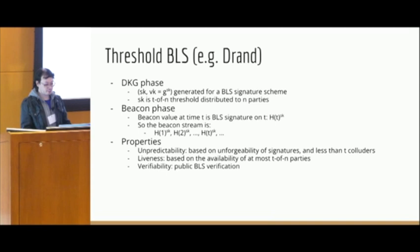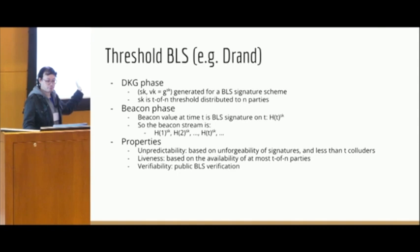So what properties does this have? It's unpredictable because it's based on the unforgeability of signatures. We already know that BLS is an unforgeable signature scheme, so nobody should be able to predict the output of these signatures, especially less than T colluders. It's live based on the availability of at most T of N parties. This threshold setting makes sense. And verifiability is easy because it's a signature scheme. You can have a public key of the signature scheme which can verify the final public output.